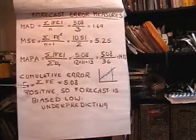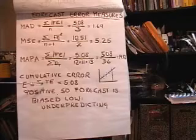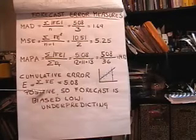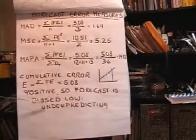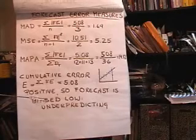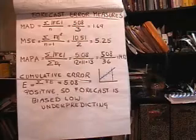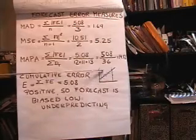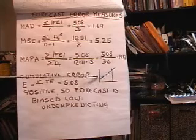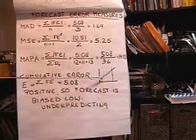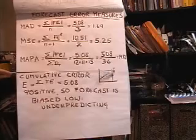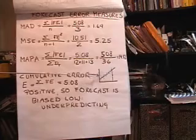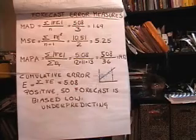The cumulative error is just the summation of the forecast errors, which is 5.08. This is positive, so the forecast is biased low — we're under-predicting. When there's a significant trend, like in this diagram, exponential smoothing, the moving average, and the weighted moving average are going to be predicting down here when they should be predicting up here. Perhaps regression analysis would be a better approach if you have significant trend.